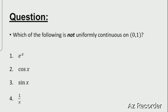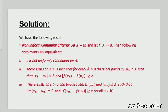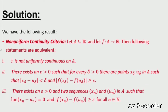Now let us see the solution. We have the following result — the non-uniform continuity criteria. Let A be a subset of R and let f from A to R be a function. Then the following statements are equivalent. First: f is not uniformly continuous on A. Second: there exists an epsilon greater than 0 such that for every delta greater than 0, there are points x_delta, u_delta in A such that |x_delta - u_delta| < delta and |f(x_delta) - f(u_delta)| ≥ epsilon.